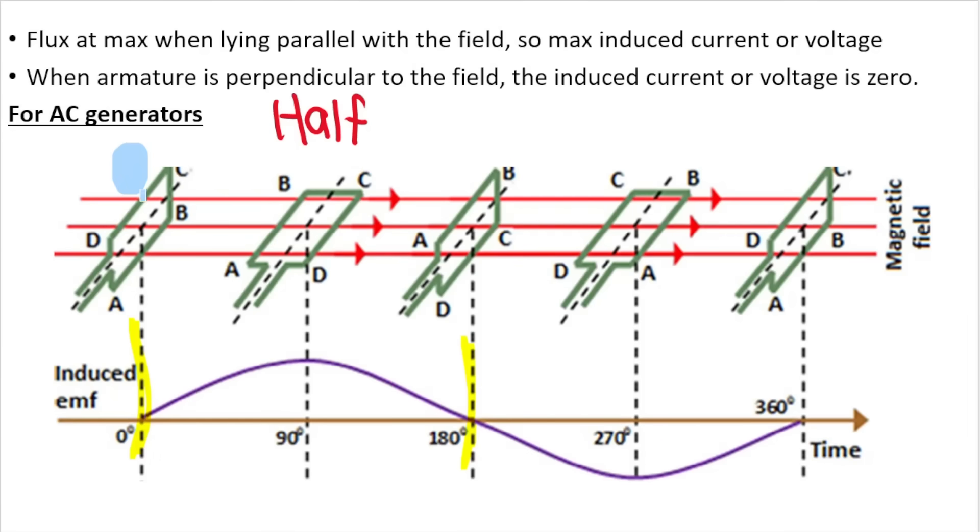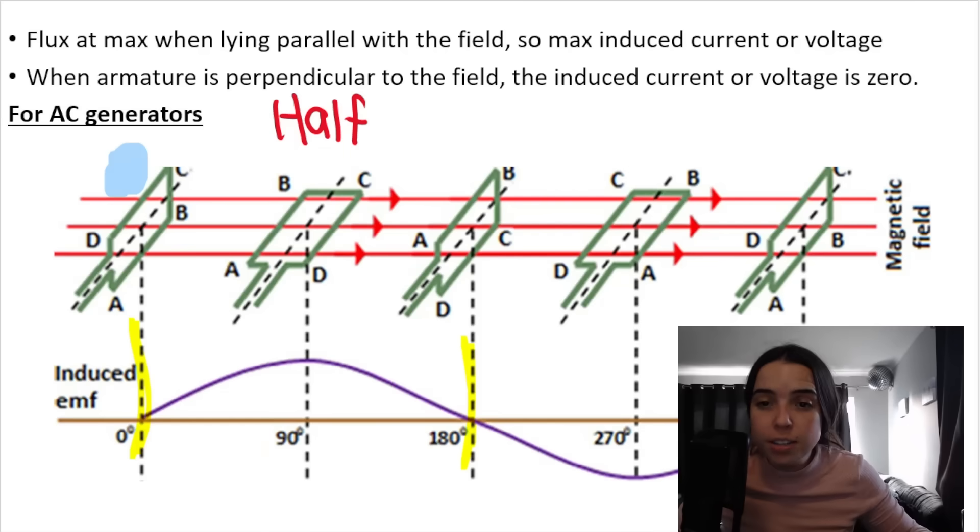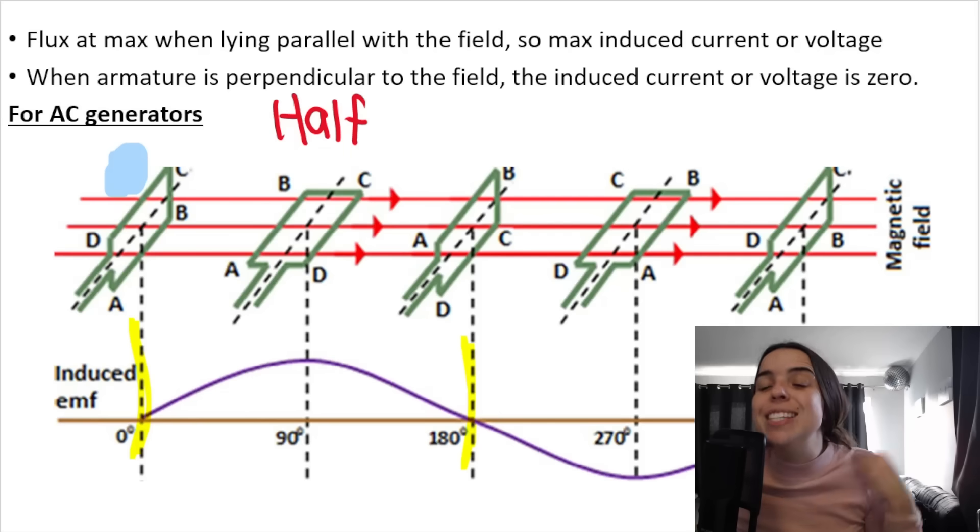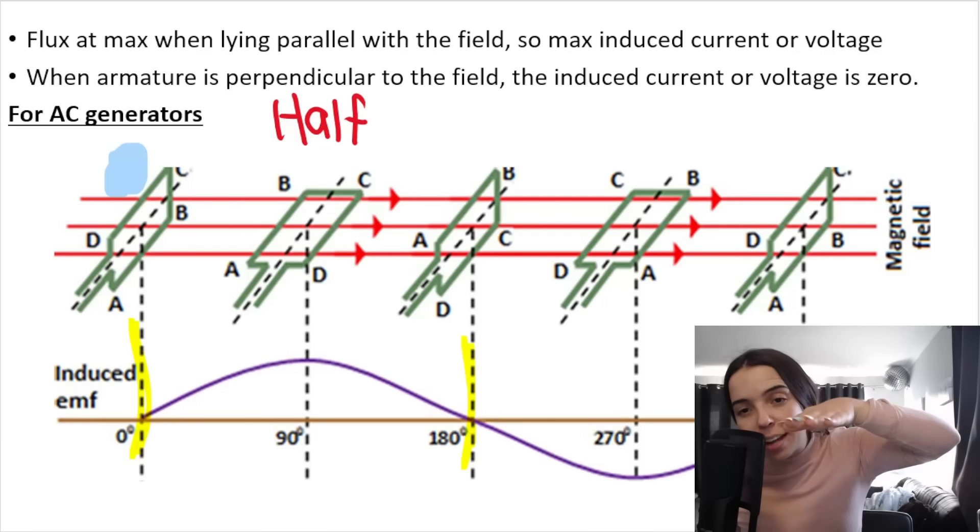You can see over here, my first picture, my coil is in the vertical position. So if I have to show you with my hands, if my magnets were located on either side of my coil, so here's a magnet and here's a magnet, and the field lines are going like this, my coil would be standing like this. Then when it rotates and it is now like this, flat, horizontal,